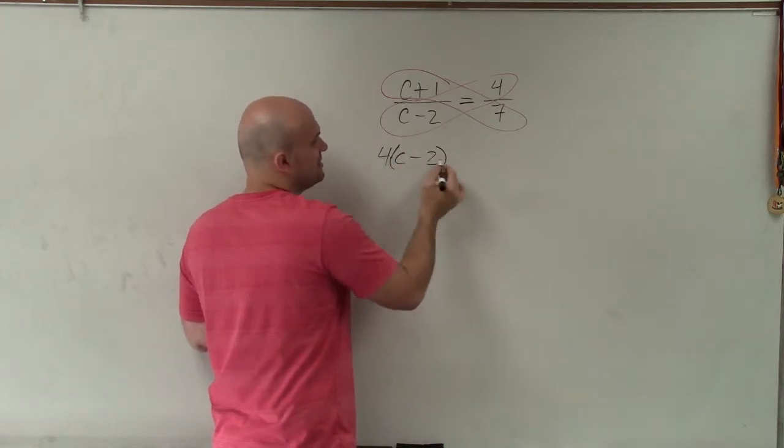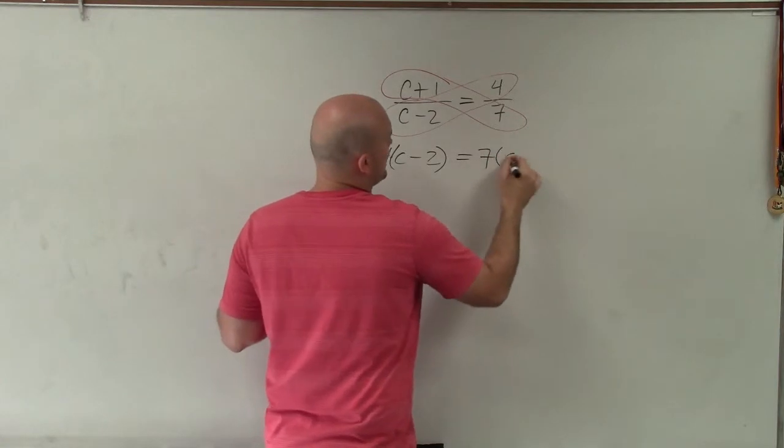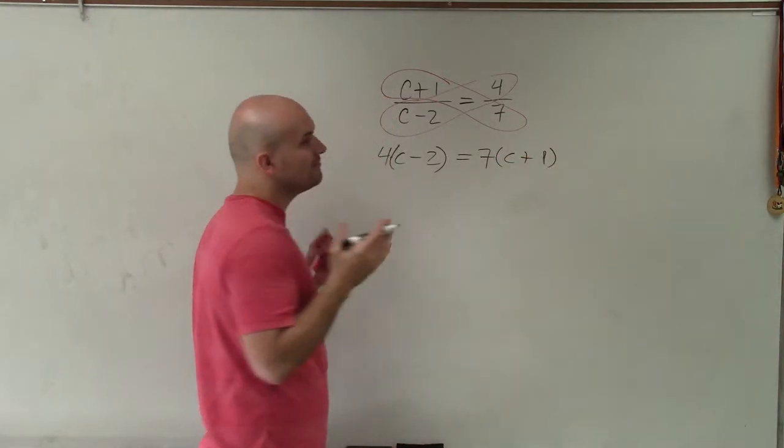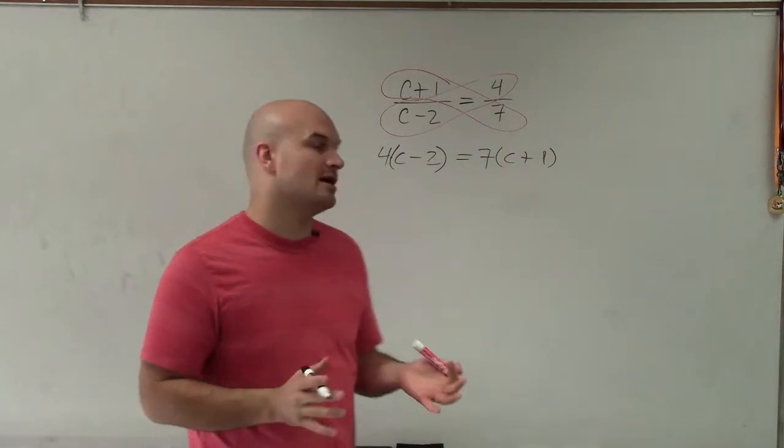It's 4 times c minus 2 equals 7 times c plus 1, all right? Very, very important that we apply our parentheses.